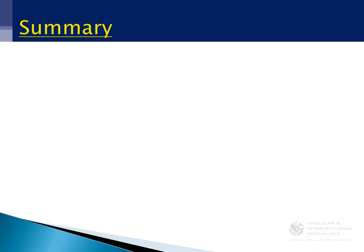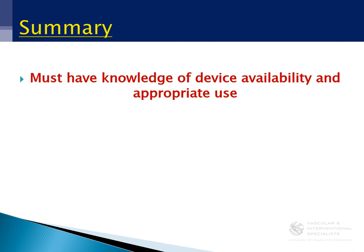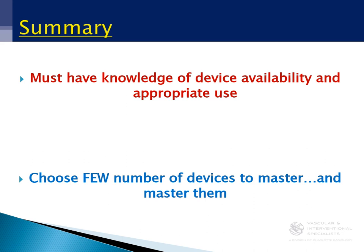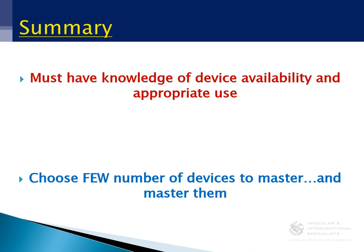That is a whirlwind tour of the devices available. My summary: you have to have knowledge of device availability and appropriate use. Have I used every single one of these devices I just discussed? Of course not. But I'm familiar with them and I know what I can pull on when I need it. The truth of the matter is just use a couple — master a couple and really get very good at them. You don't need to know every crossing catheter; pick two or three. If you choose to use atherectomy, pick two or three. Same with wires. Otherwise you drive yourself mad and lead to inefficiencies. Hopefully you enjoyed this introduction — go save some legs, save some patients, and make people feel better.